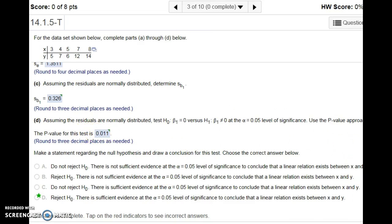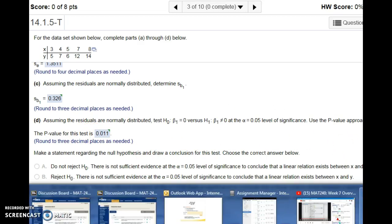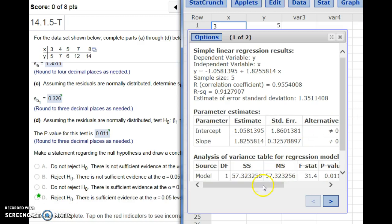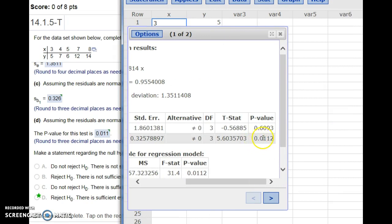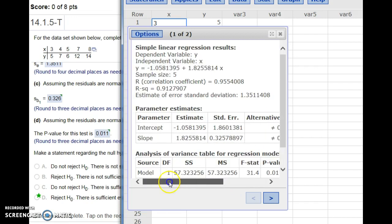The p-value is on the line for slope here. Scroll over and the p-value is listed for the slope. That's our probability that our slope is in fact equal to zero.